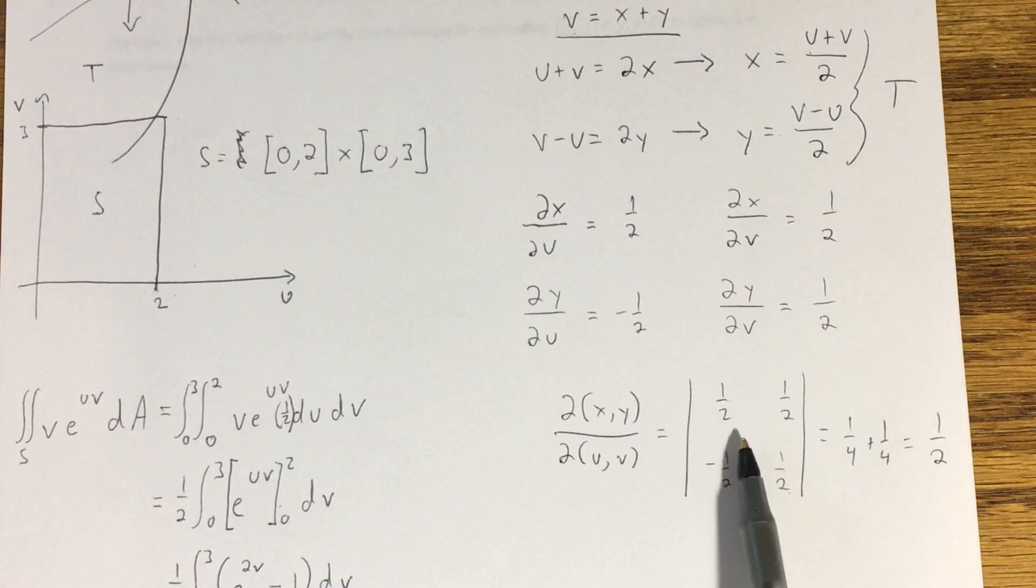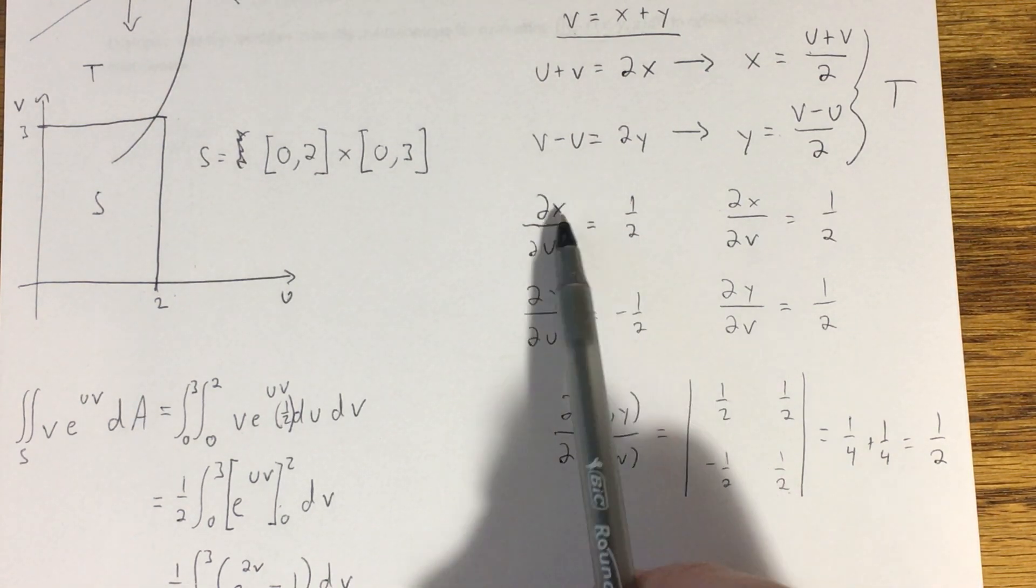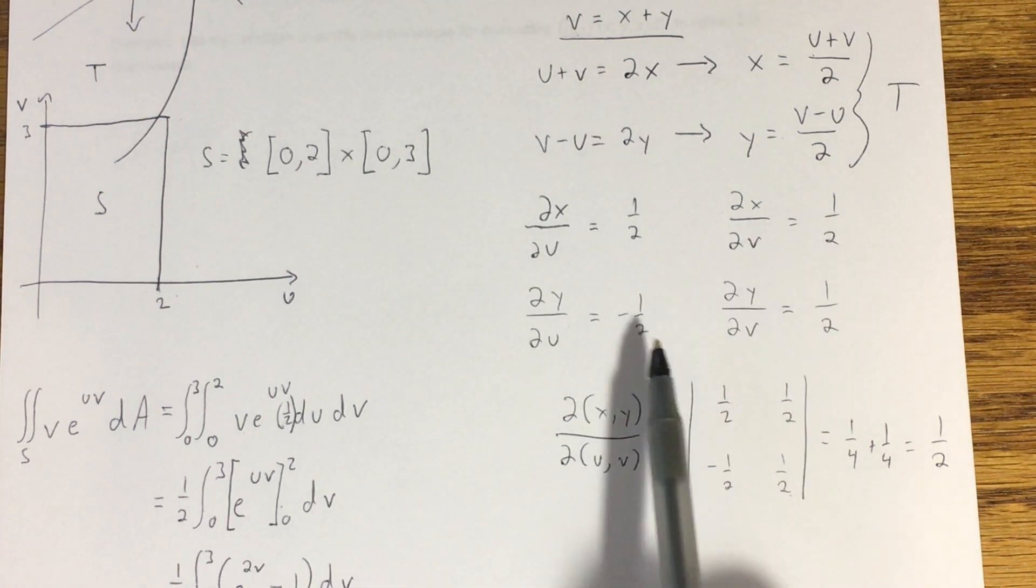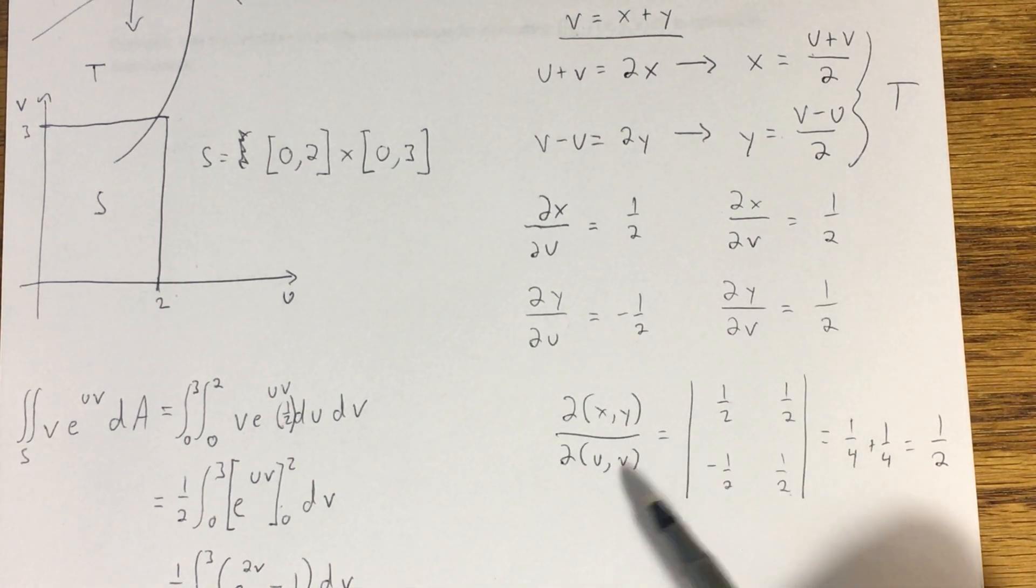Down here I set up my Jacobian. Remember the X's and Y's determine the rows of the Jacobian, so 1 half, 1 half, negative 1 half, 1 half. The U's and V's determine the columns. This Jacobian comes out to a constant 1 half.